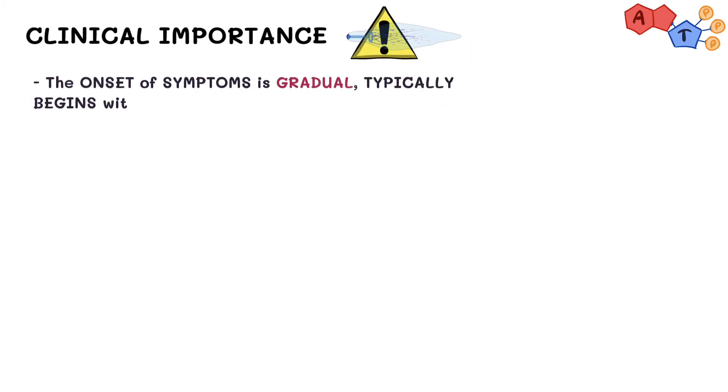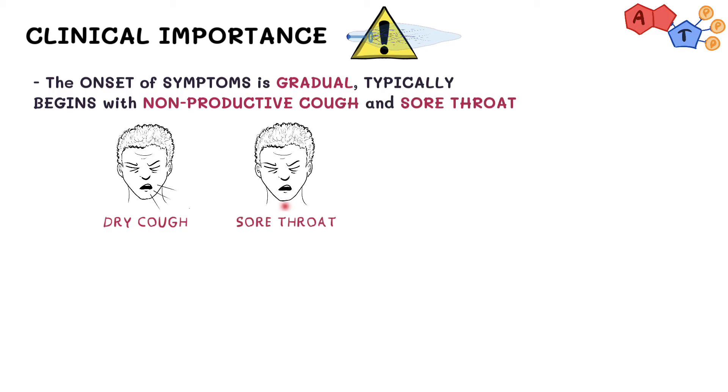The onset of symptoms is gradual, typically beginning with a non-productive cough and sore throat. Small amounts of whitish, non-bloody sputum are also produced.